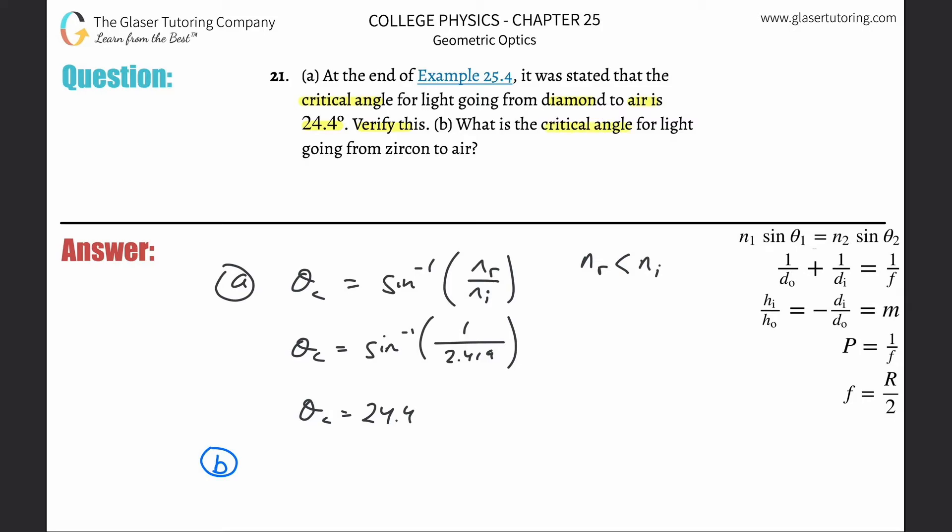What is the critical angle for light going from zircon to air? So again we can use the same formula, right? And this time though, we know from zircon to air, so air is going to be the refracted part. So we use the index of refraction for that on the top, and then we go to zircon. So the value is about 1.923.